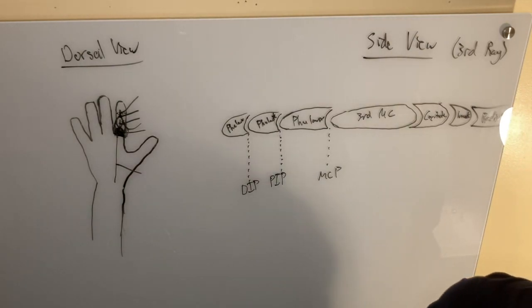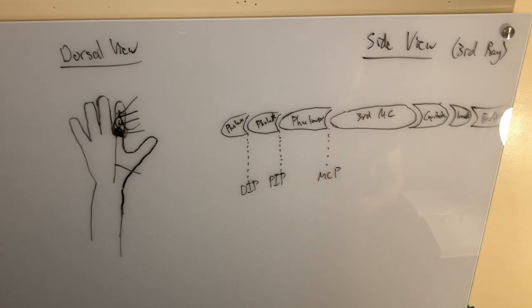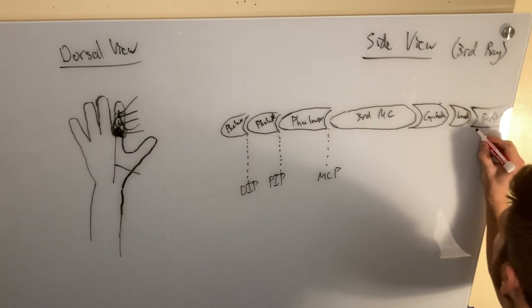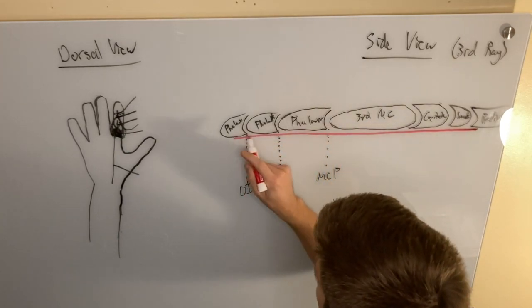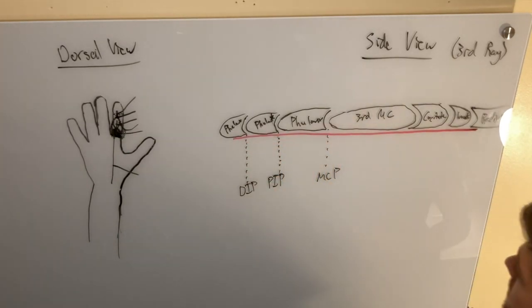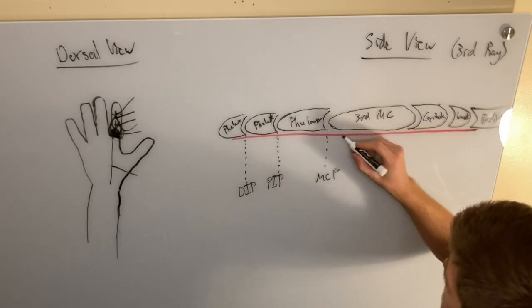So we're going to add in a couple more things that weren't on this one. So we have the tendon of flexor digitorum profundus making its way all the way to the distal phalanx. We have this thing, which is also new,